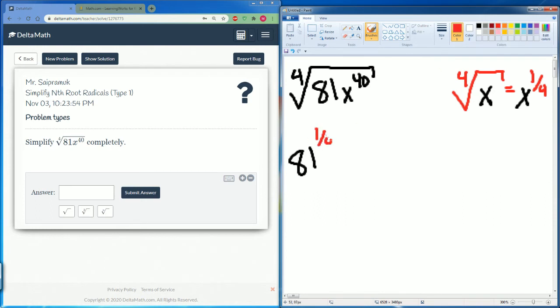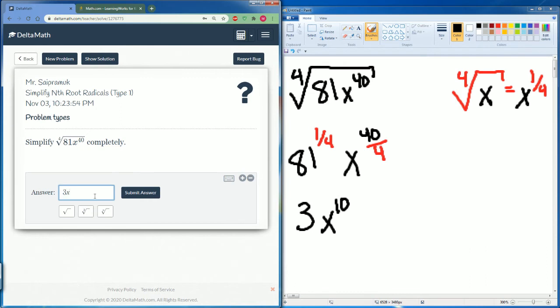So 81, the exponent is 1/4, then we have x 40, then divide this by 4. So 81 to the 1/4 power is 3, and x 40 divided by 4 is just 10. So it is 3x to the 10th power.